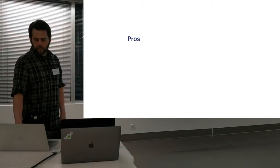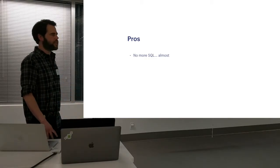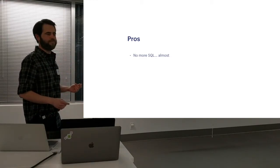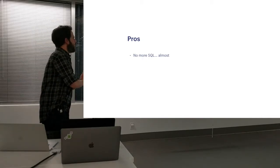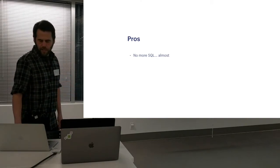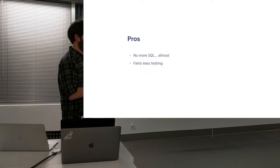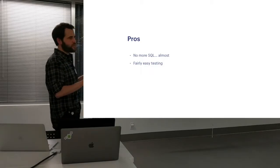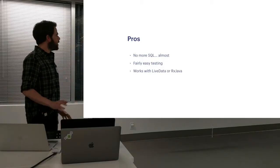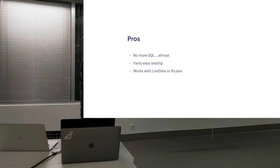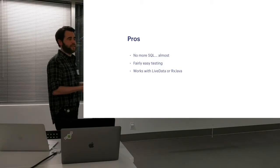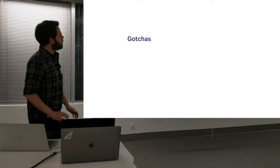When dealing with Room, the pros: no more raw SQL, no more using the SQLite API from API level one — no more ContentValues, no more cursors. You do have to write queries if needed, but not a huge deal. Testing is fairly easy — you need an emulator and create the in-memory database, but it's fairly simple. The nice thing about Room is it works well with both LiveData and RxJava. If you're an RxJava junkie, instead of returning a LiveData object you can return a Flowable of your return type, which is really handy.